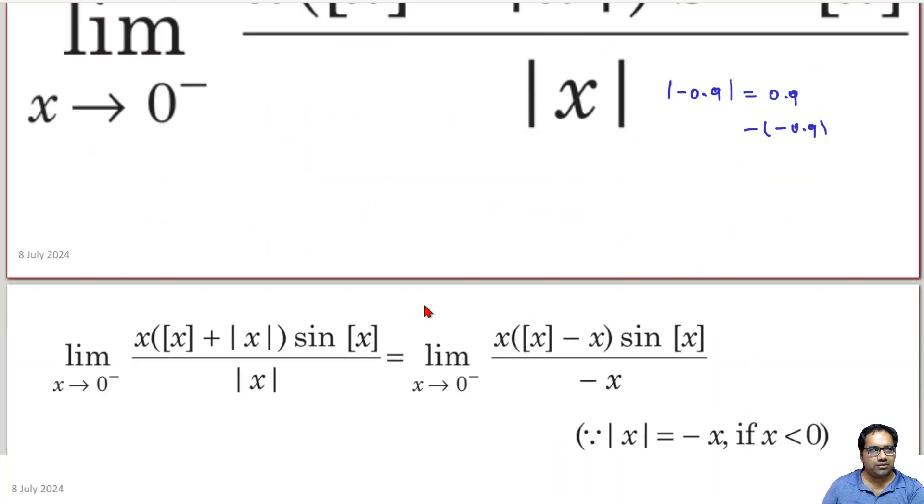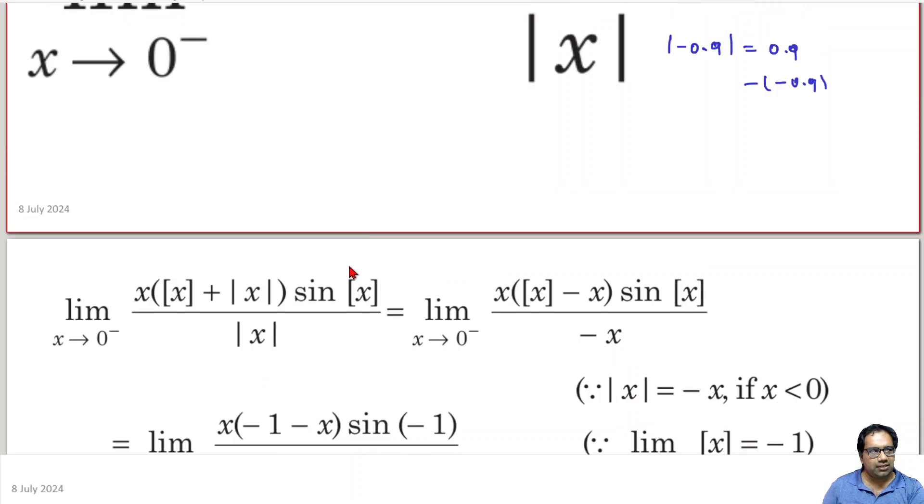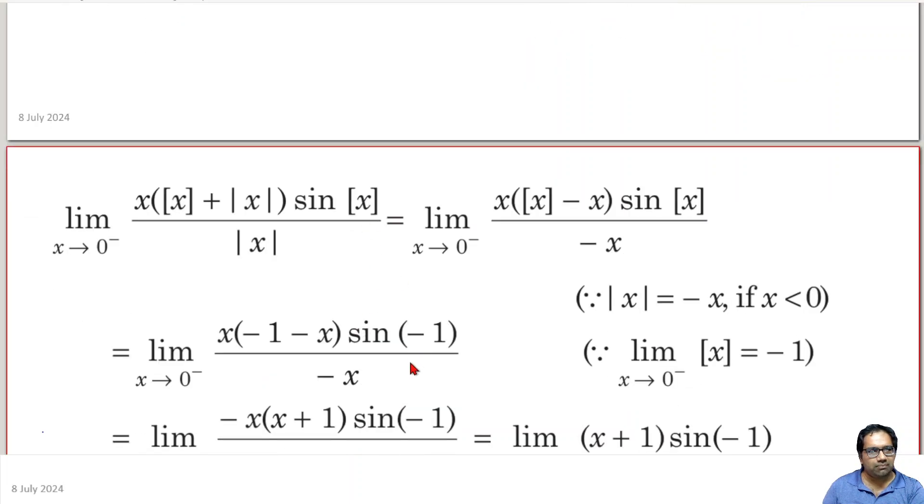Let us just directly substitute these things. This greatest integer function of x, this becomes minus 1. Absolute value of x will become minus x. Absolute value of x will become minus x. And greatest integer function of x will again become minus 1.